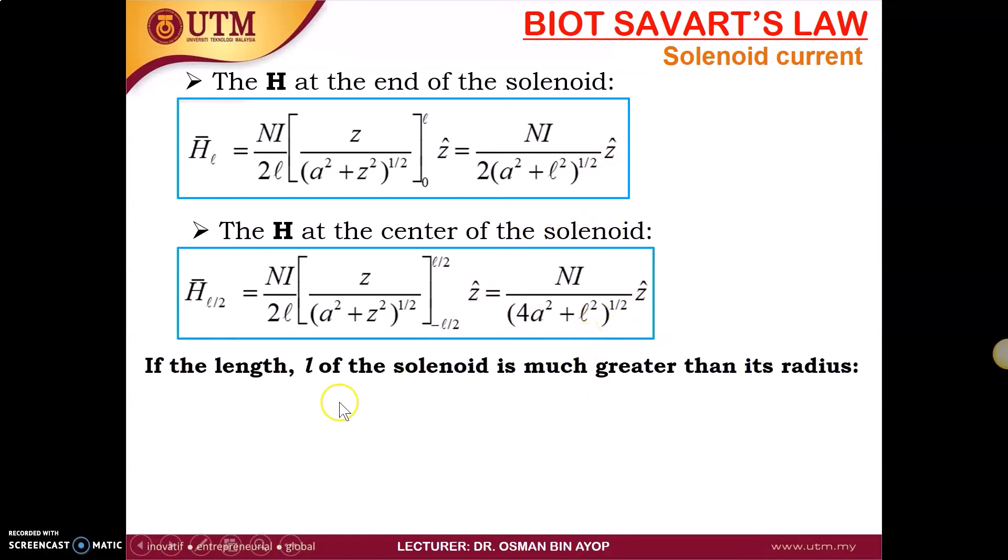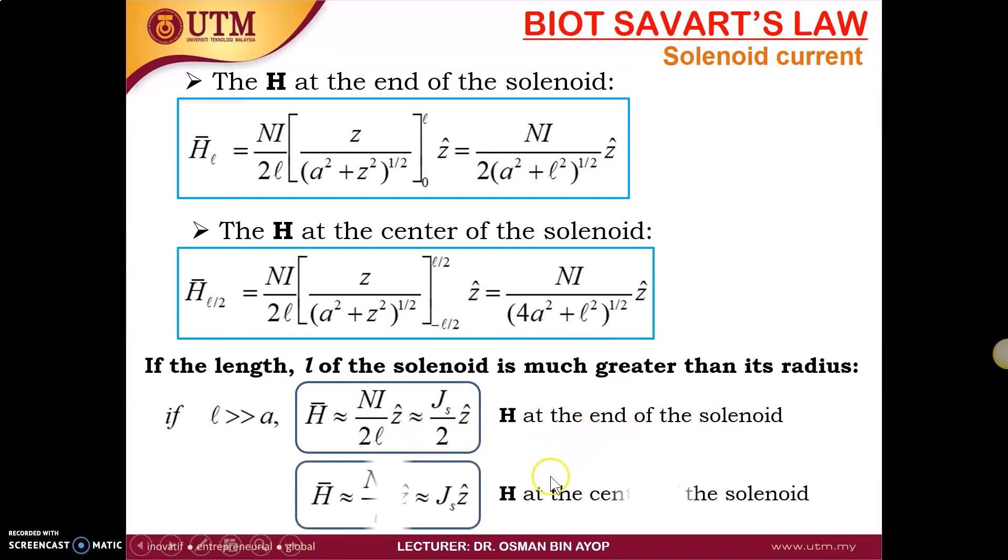Let's say if the length of the solenoid is much greater than its radius, it's very long. We can say that l is much greater than a. We can simplify the first expression to be H equal to Ni over 2l, or equal to js over 2 in the z direction, because Ni over l is js. This is H at the end of the solenoid.